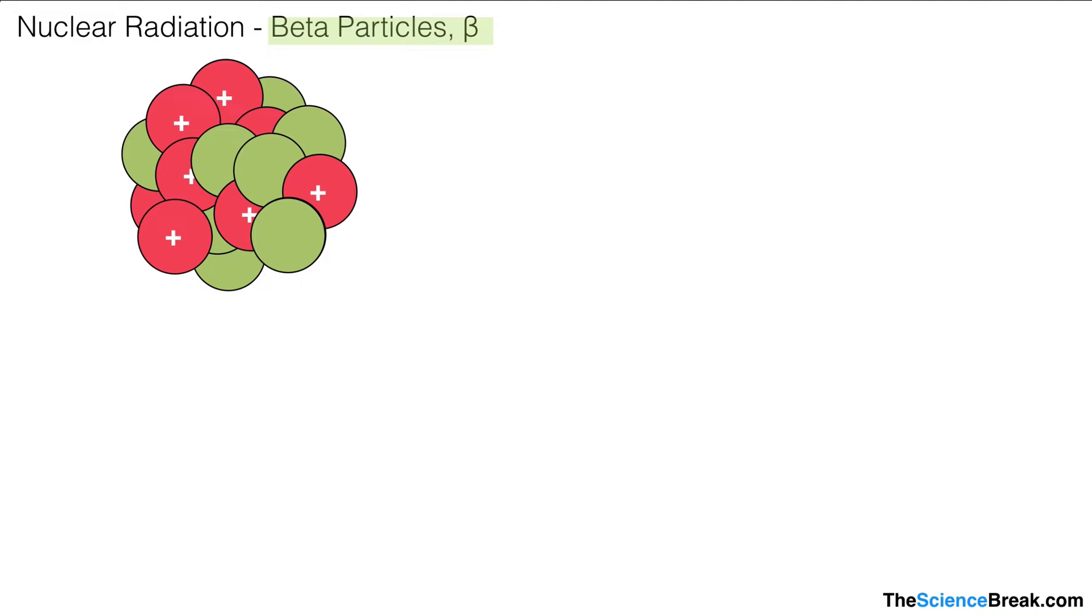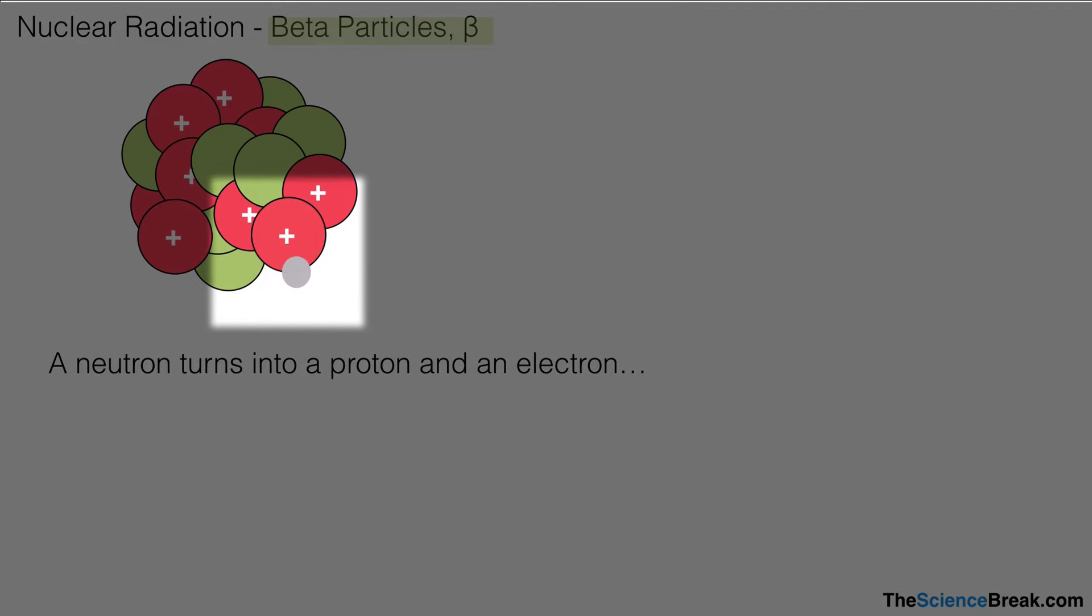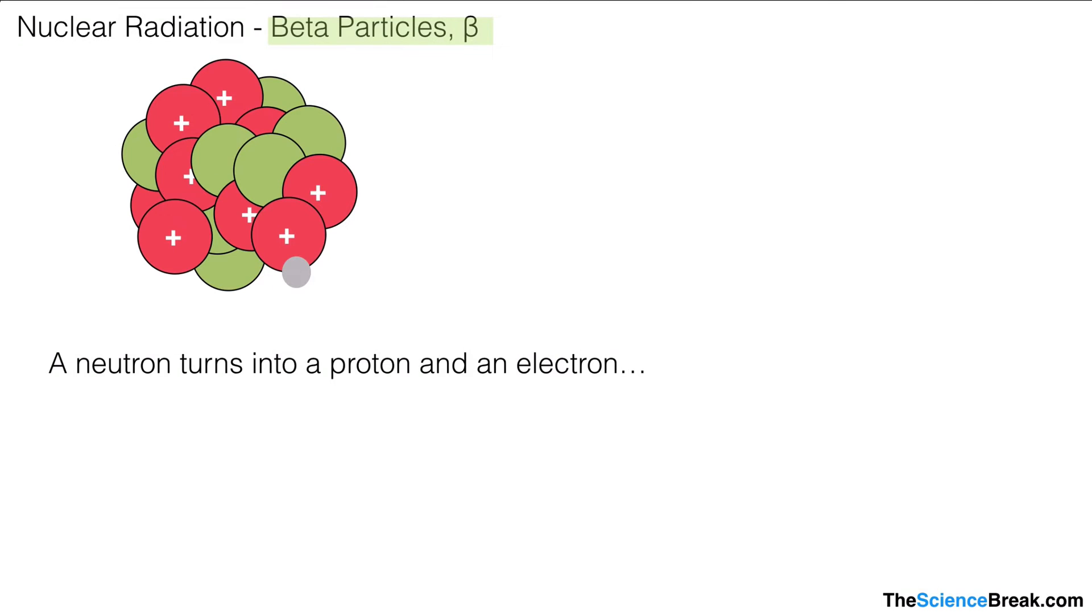Next is our beta particle. The symbol you can see in the title there; it's like a B with a long tail. This happens when we have a neutron which turns into a proton and an electron. If you watch there, that neutron has turned into a proton and an electron, and then a high-speed electron is ejected from the nucleus as shown in the diagram there. This is a beta particle, and it has a charge of minus one. It is in fact an electron, and as we know, electrons have a charge of minus one.